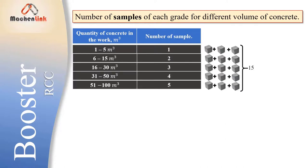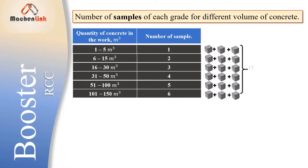And in similar way, if concrete volume is 101 to 150 m³, then total number of samples will be 6. In this way above 50, we take one sample for each 50 m³ concrete.